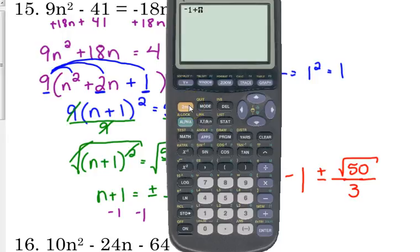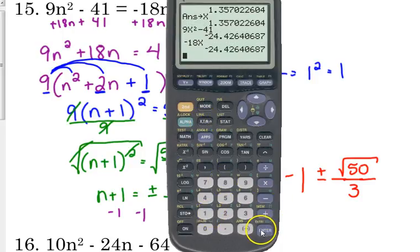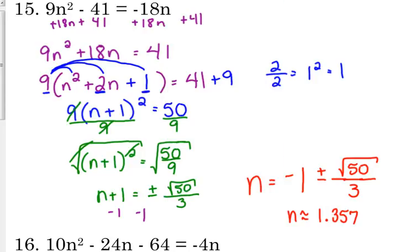So to be careful with this, you need to put the square root of 50. Make sure you close your parentheses after the 50 because the 50 is the only thing under the square root and then divide that by 3. That is what one decimal approximation of our answer is. Let's store that as x. 9x squared minus 41, that should be equal to negative 18 times x. And it is.